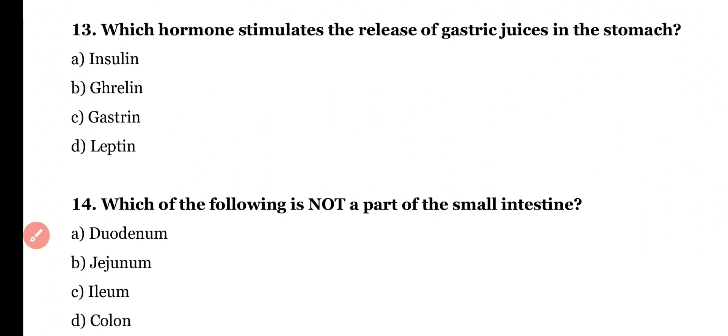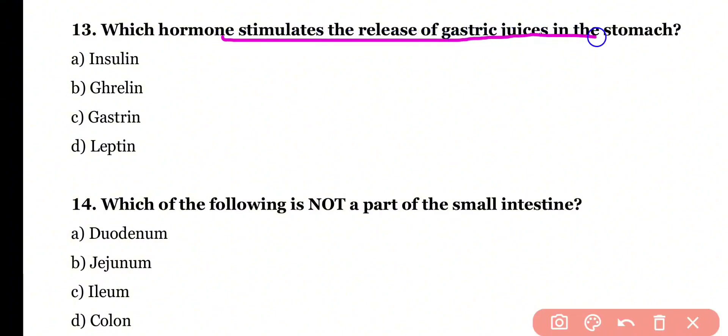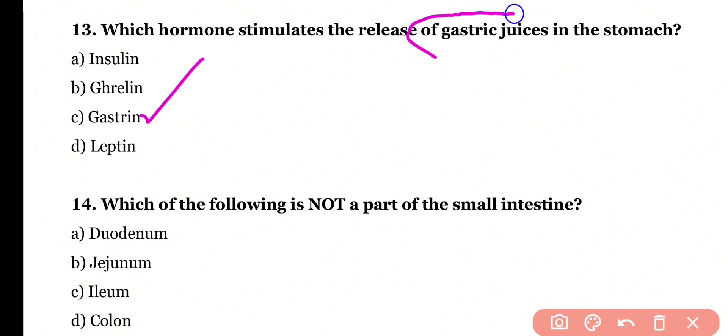Question 13. Which hormone stimulates the release of gastric juice in the stomach? Insulin, ghrelin, gastrin, or leptin? Correct answer is option C. Gastrin is the hormone that stimulates the release of gastric juice from the stomach.